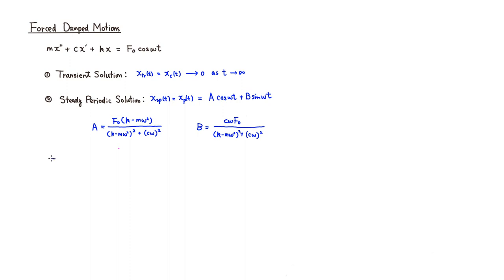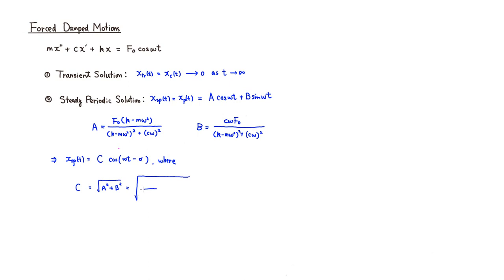Since we have a combination of cosine and sine, we can combine them and write the steady periodic solution as C·cos(ωt − α), where C = √(A² + B²). To compute C, we square the denominator: (k − mω²)² + (cω)², and that whole expression is squared.